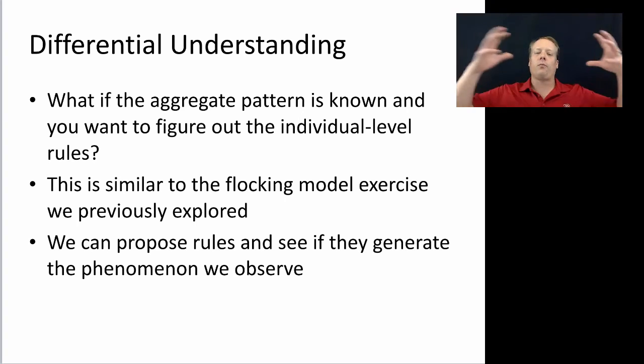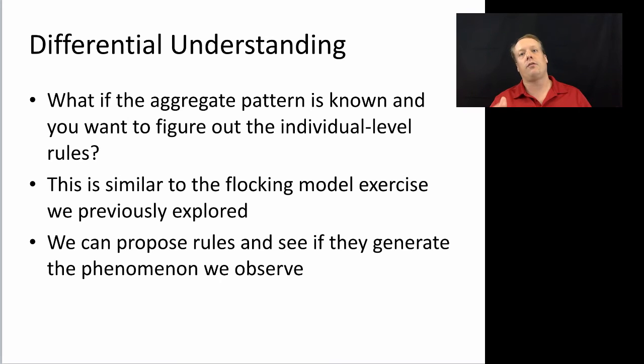I give you what the flocks look like, and then you can propose rules to observe whether or not they generate it, and you can see what happens as a result. So imagine you didn't have the flocking model, but you just observed birds, which is essentially what was done with the original Boyd's model. Then you could start to figure out, well, what might describe the way those birds work? And then when you put those rules down, you can then see if they generate the patterns that you want to observe.